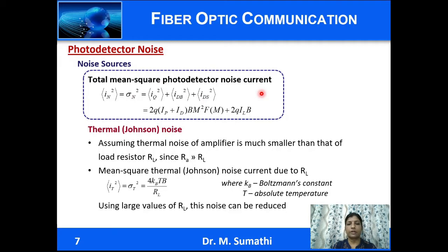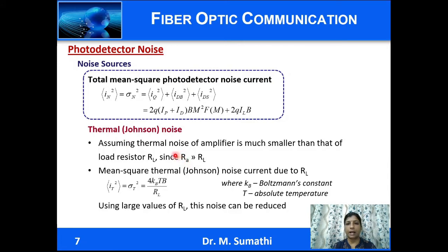The total noise current due to all noise sources — quantum noise, bulk dark current, and surface dark current — is summed to give an expression for the mean square value of the photodetector noise current. We also need to consider thermal noise or Johnson noise. Assuming the amplifier impedance is very large compared to the load resistance, the thermal noise of the amplifier is much smaller than that of the load resistance. The mean square thermal noise current expression shows that using large values of R_L reduces this noise.